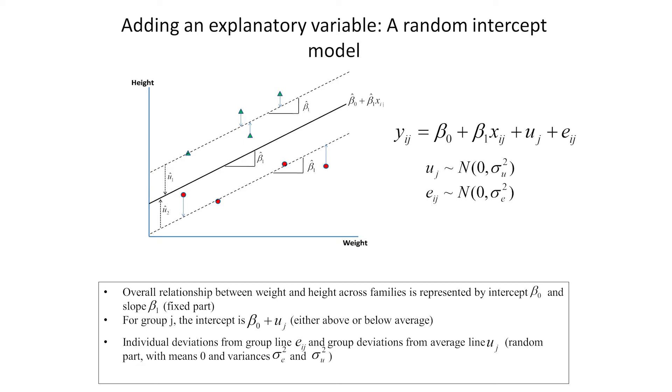And we still assume the individual residuals e_ij and group level residuals u_j are approximately normal, with mean 0 and variances σ²ₑ and σ²ᵤ.